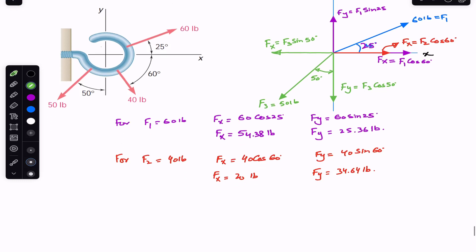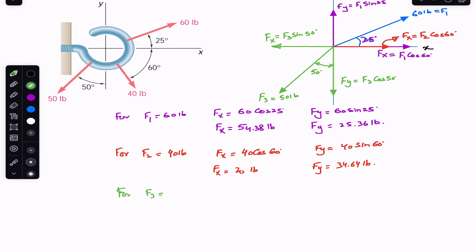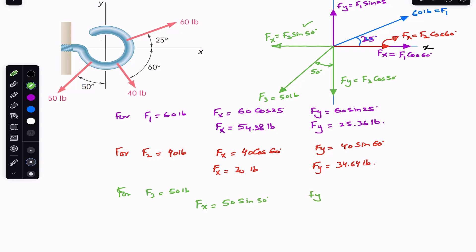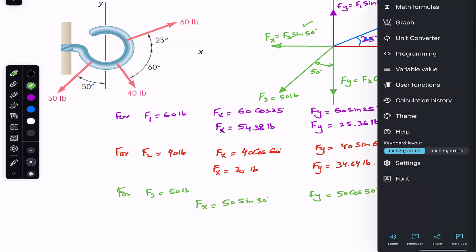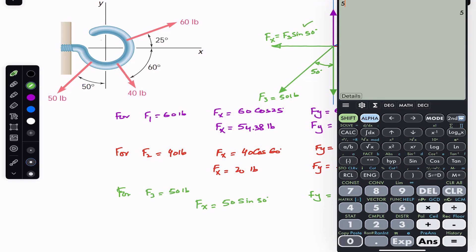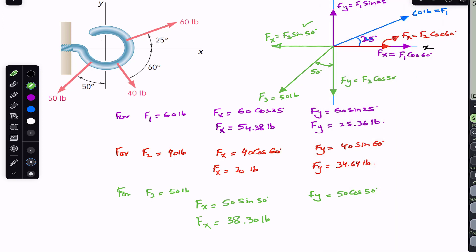Similarly, Fx = F3 sin(50°). For F3 equals 50 pounds: Fx = 50 sin(50°) ≈ 38.30 pounds, and Fy = 50 cos(50°) ≈ 32.14 pounds. This is how we find the Fx and Fy components of a given force.